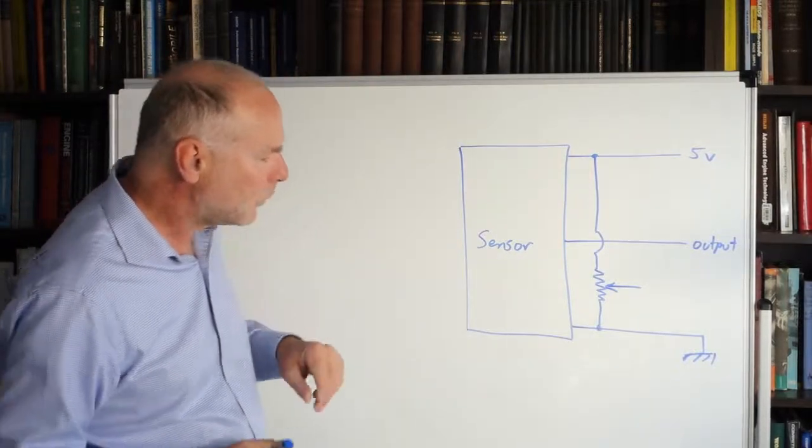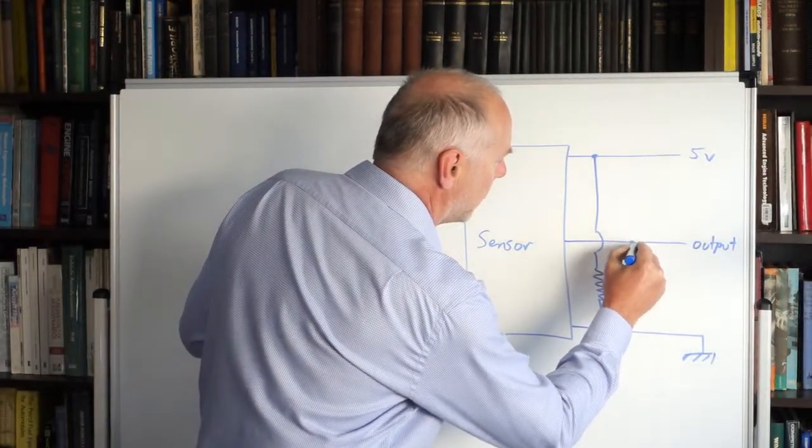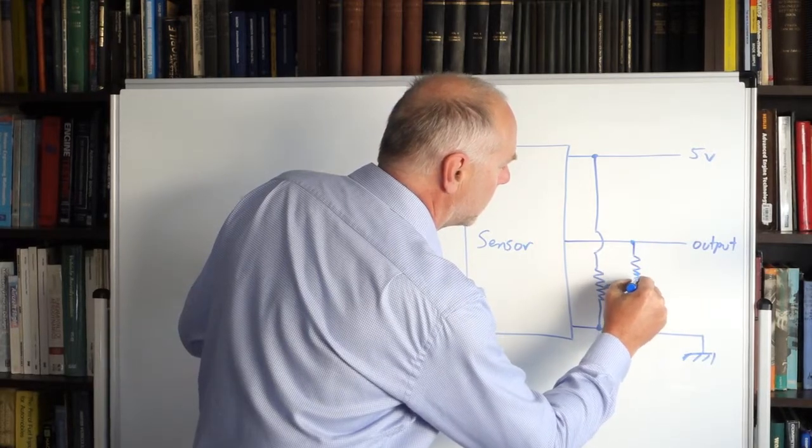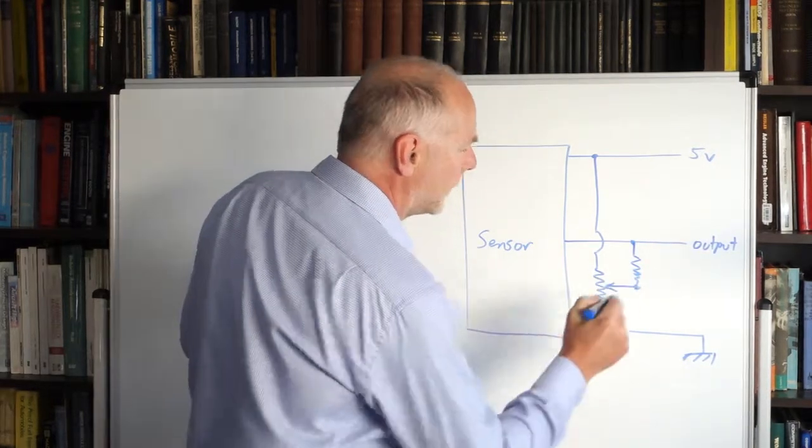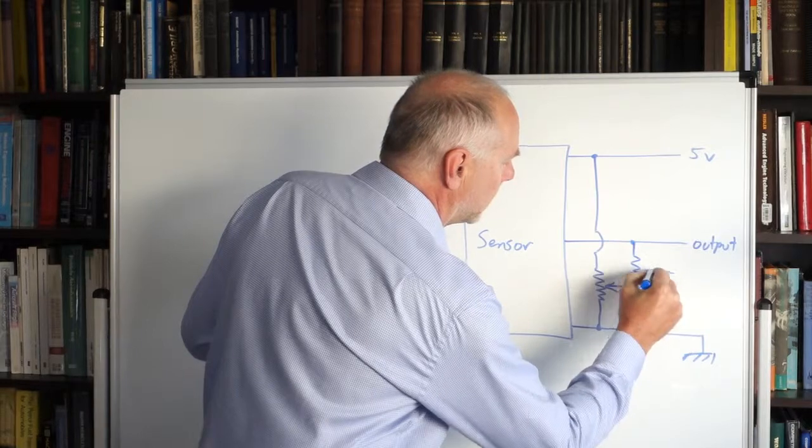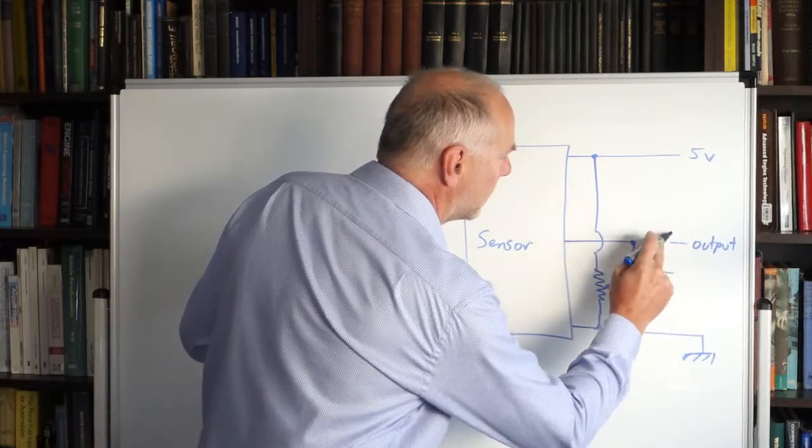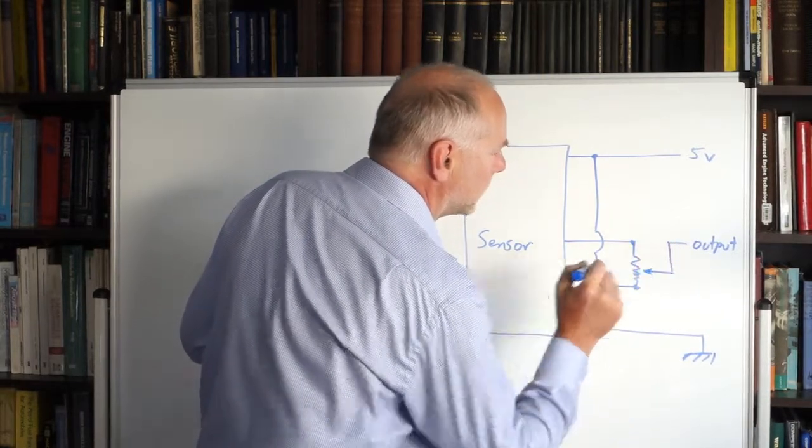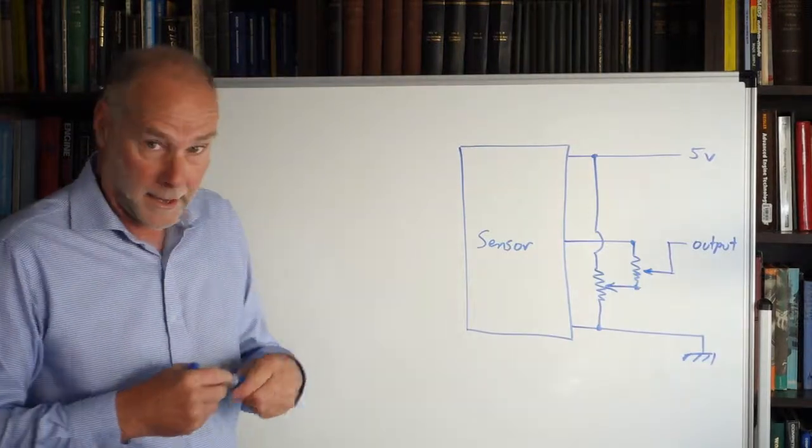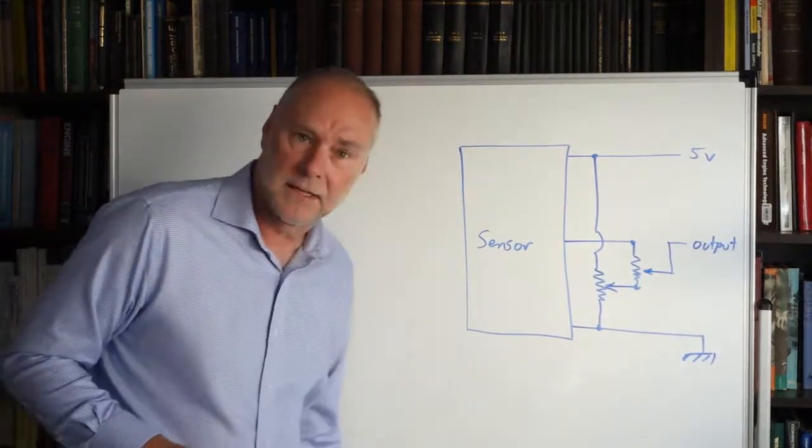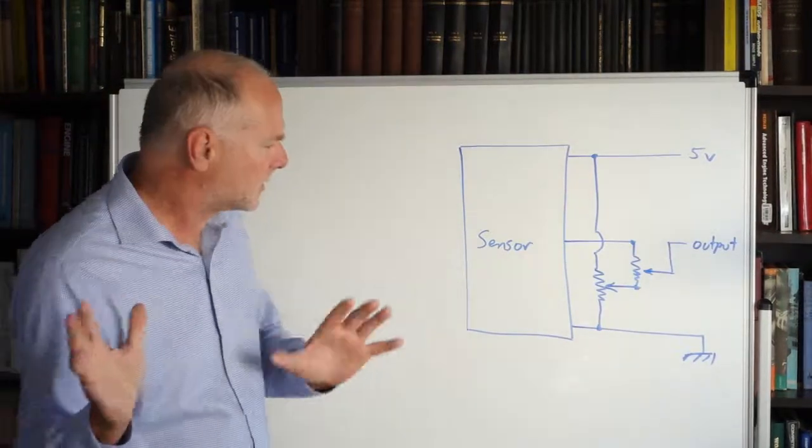Now, what can we do next? We put the other pot there, like that, and then we get rid of that output and we connect it to our new wiper. Now, if you're looking a bit confused, you're thinking this is all a bit complicated, don't worry, let me explain it.